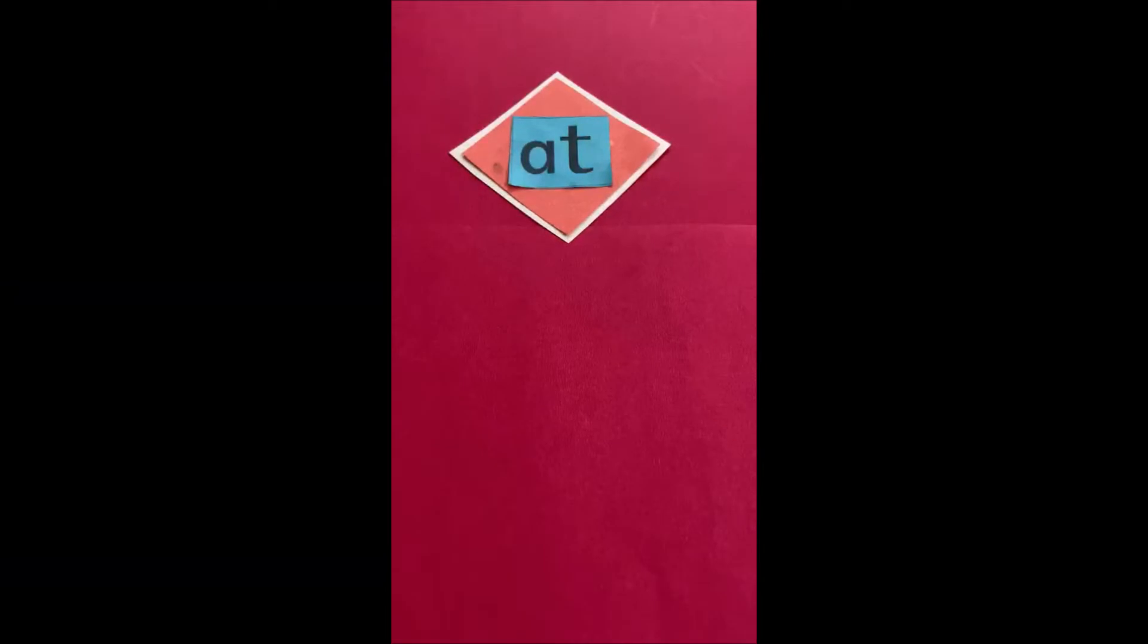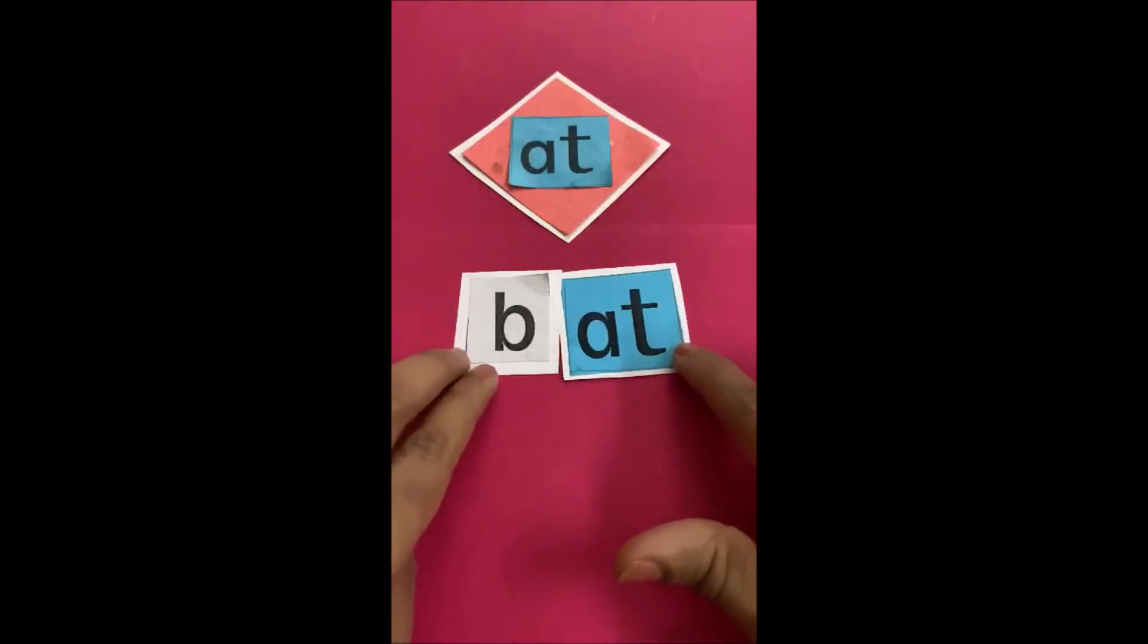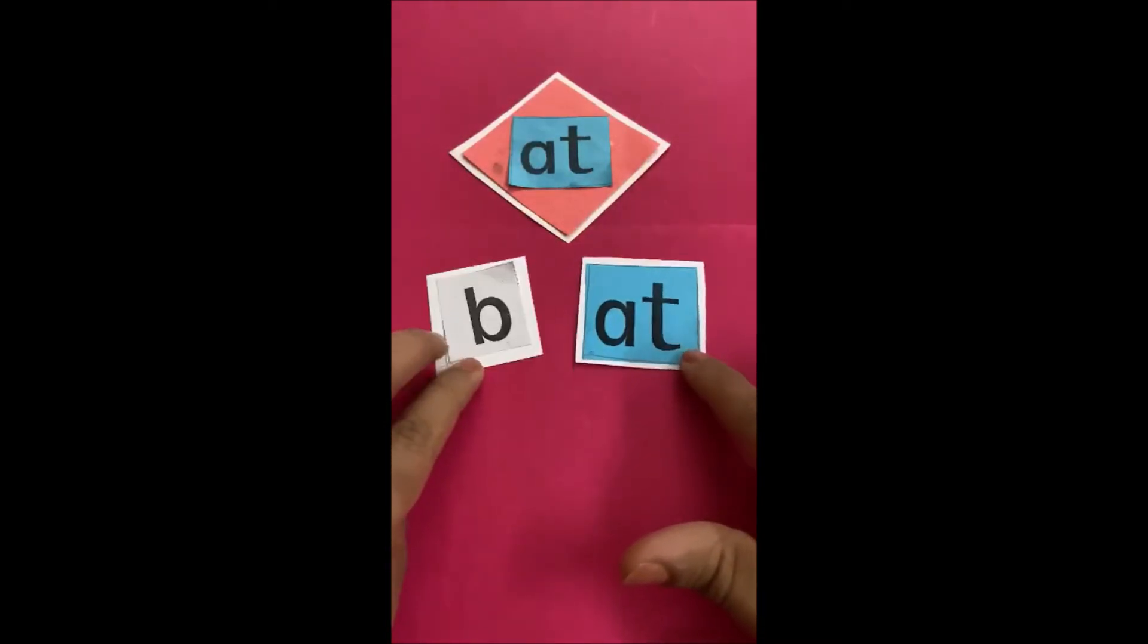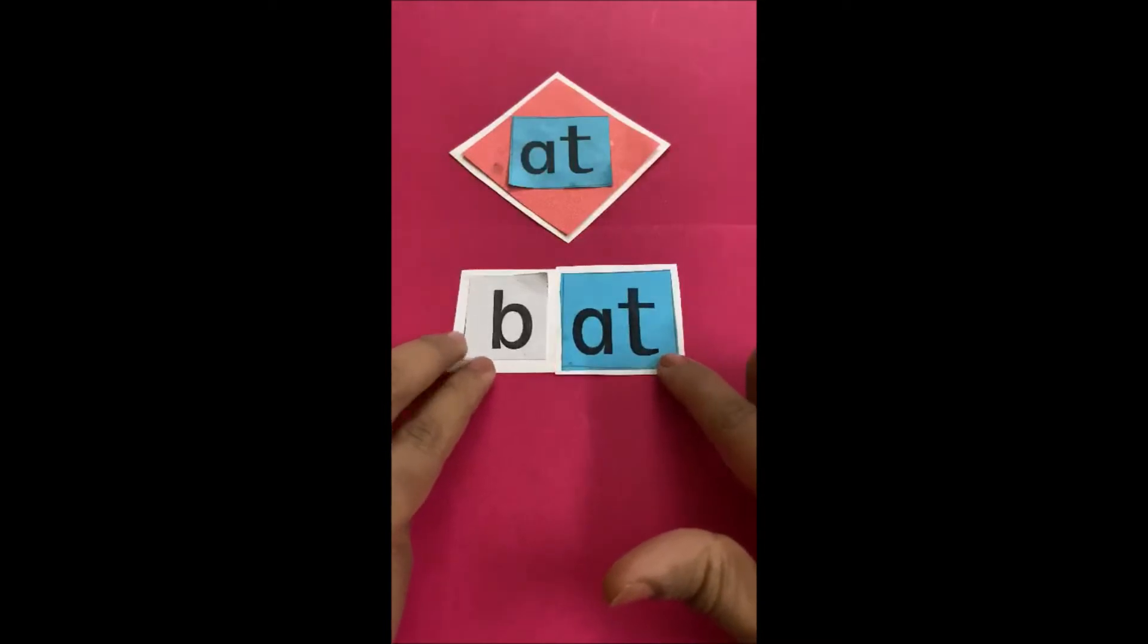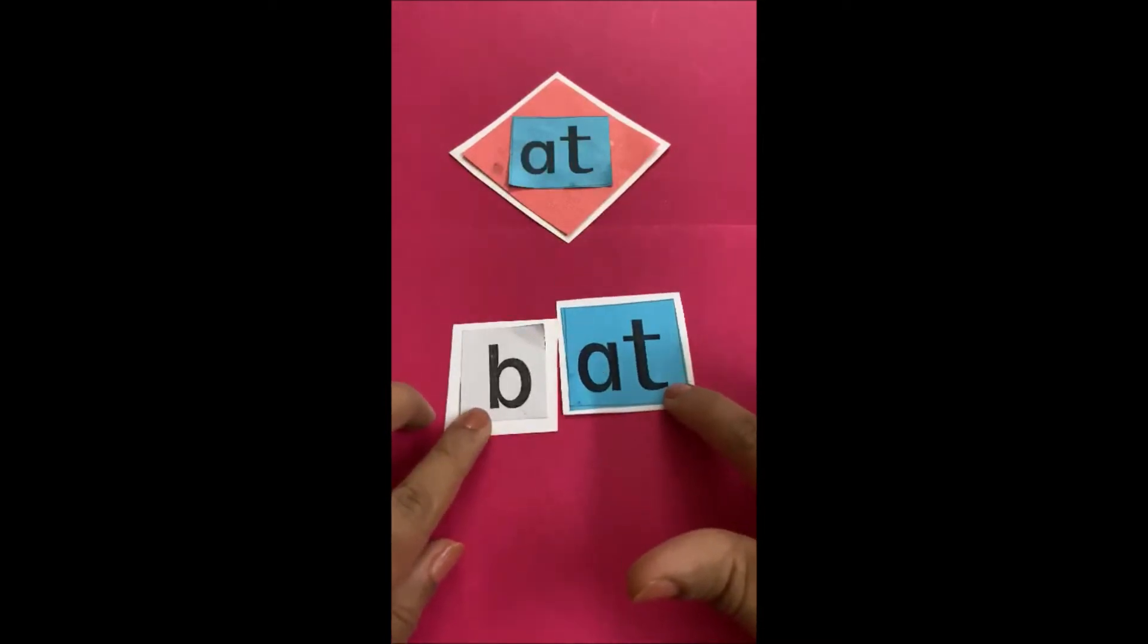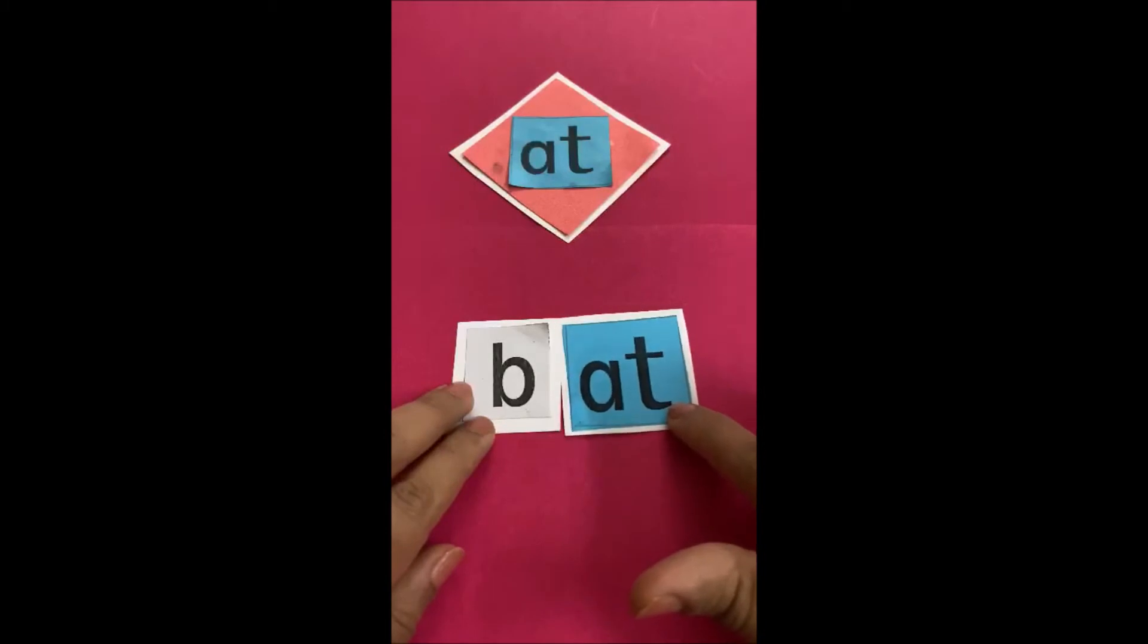So children, let's make a few words with at. Which letter is this? This is B. And when at comes with B, it becomes B and at. Bat. B and at. Bat.